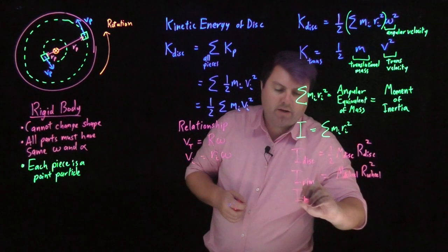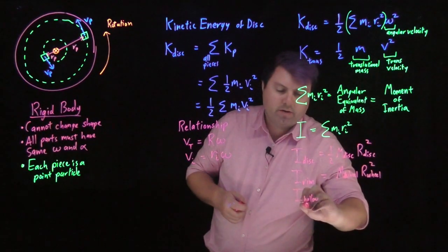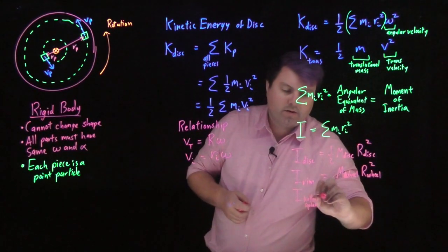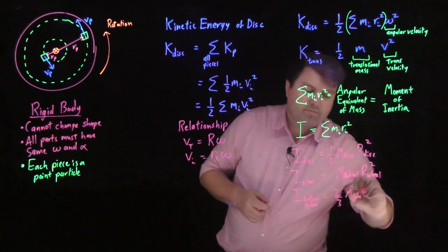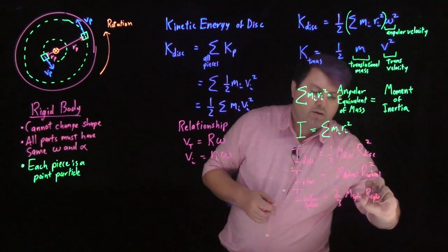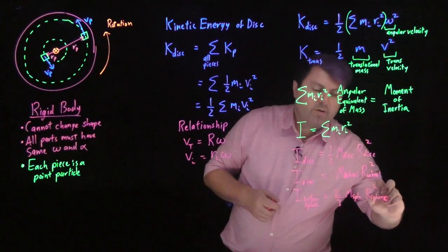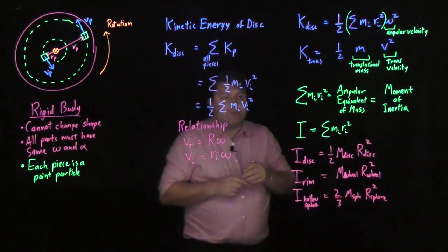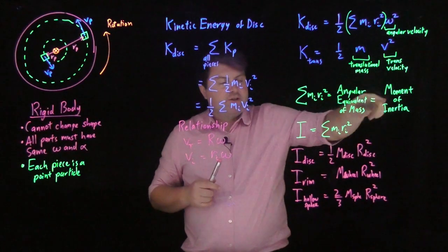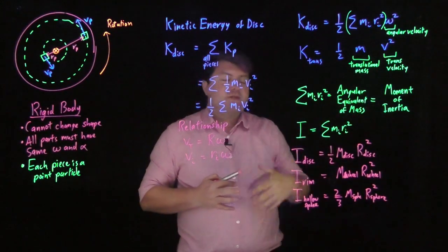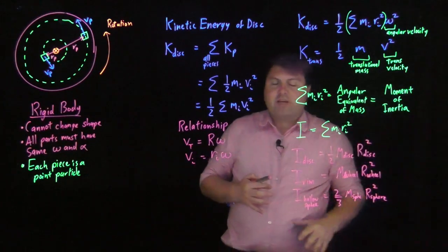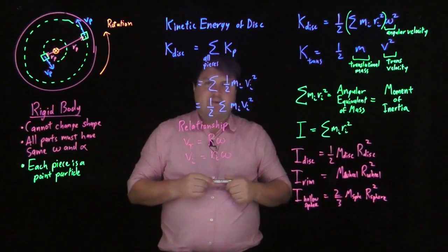For, say, a hollow sphere, two-thirds of mass of the sphere, radius of the sphere squared, and so on and so forth. So just look up moment of inertia of whichever object you are, or moment of inertia common shapes, and you'll get the full table of these. We don't want to spend all time doing this.